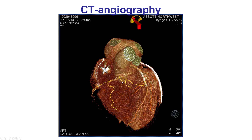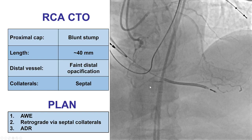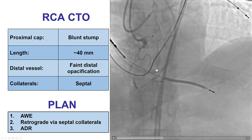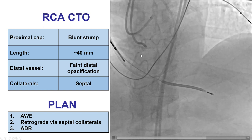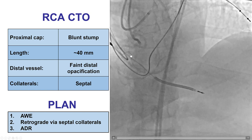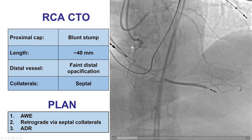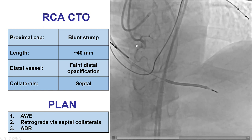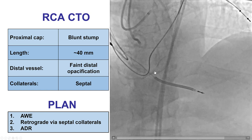A CTA was done before the procedure. There is an occlusion of the proximal right coronary artery. Right at the proximal CAP, there is an acute marginal branch. There is also a patent LAD with previously placed stents. On dual injection, there is ambiguity in the proximal CAP due to the take-off of this large acute marginal branch.